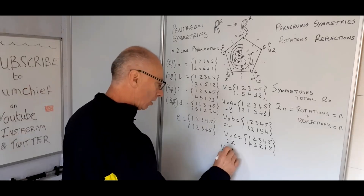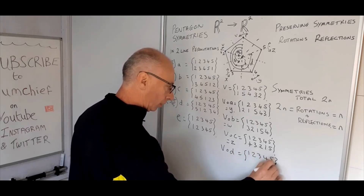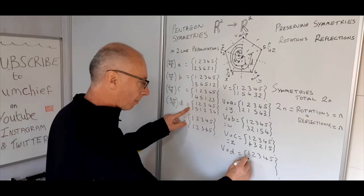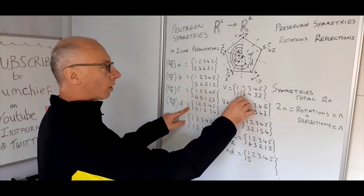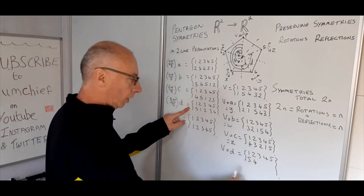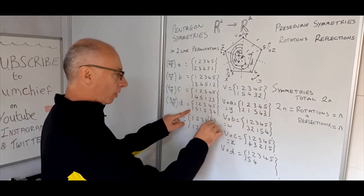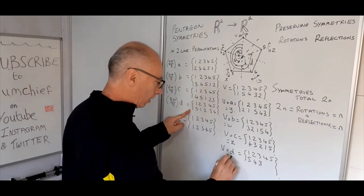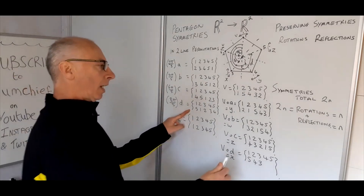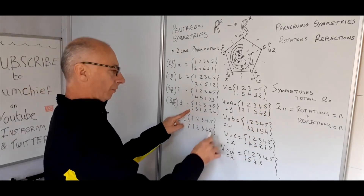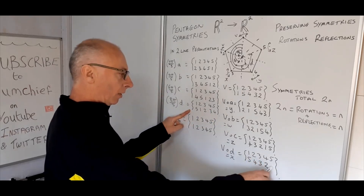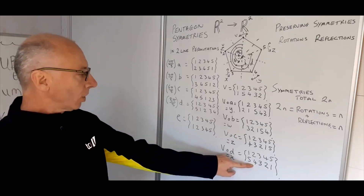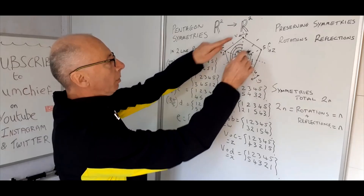V composed with D. For 1: V sends 1 to 1, D sends 1 to 5. For 2: V sends 2 to 5, D sends 5 to 4. For 3: V sends 3 to 4, D sends 4 to 3 — so 3 remains unchanged, meaning this is reflection X. For 4: V sends 4 to 3, D sends 3 to 2. For 5: V sends 5 to 2, D sends 2 to 1. So 2 and 4 exchange, 1 and 5 exchange — that's our X reflection.